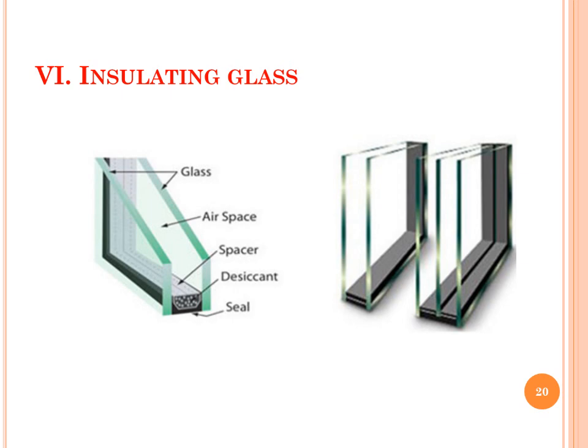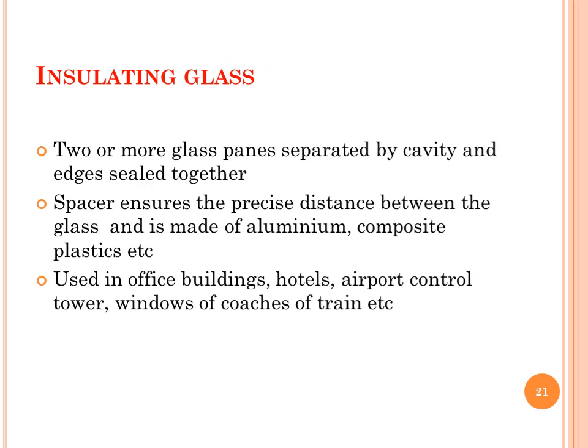Next type of architectural glass is insulating glass. It has two or more glass panels separated by a cavity with edges sealed together. A spacer ensures the precise distance between the glass panels and it is made of aluminum, composite plastics, etc. It is used in office buildings, hotels, airport control towers, windows of coaches of trains, etc.